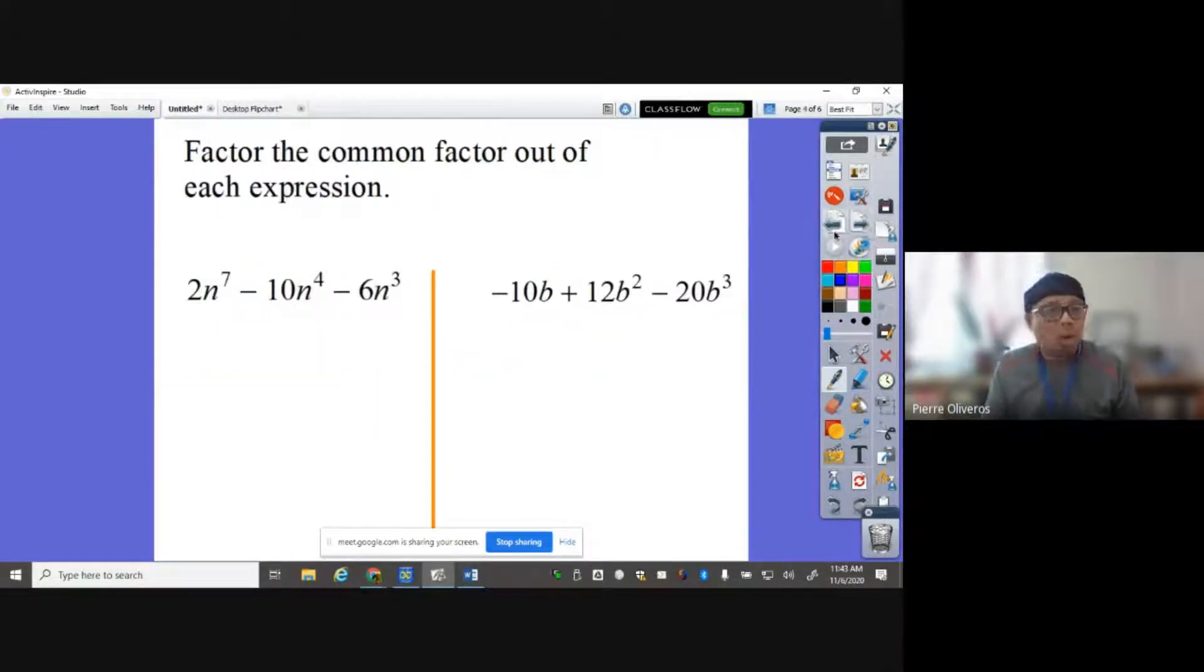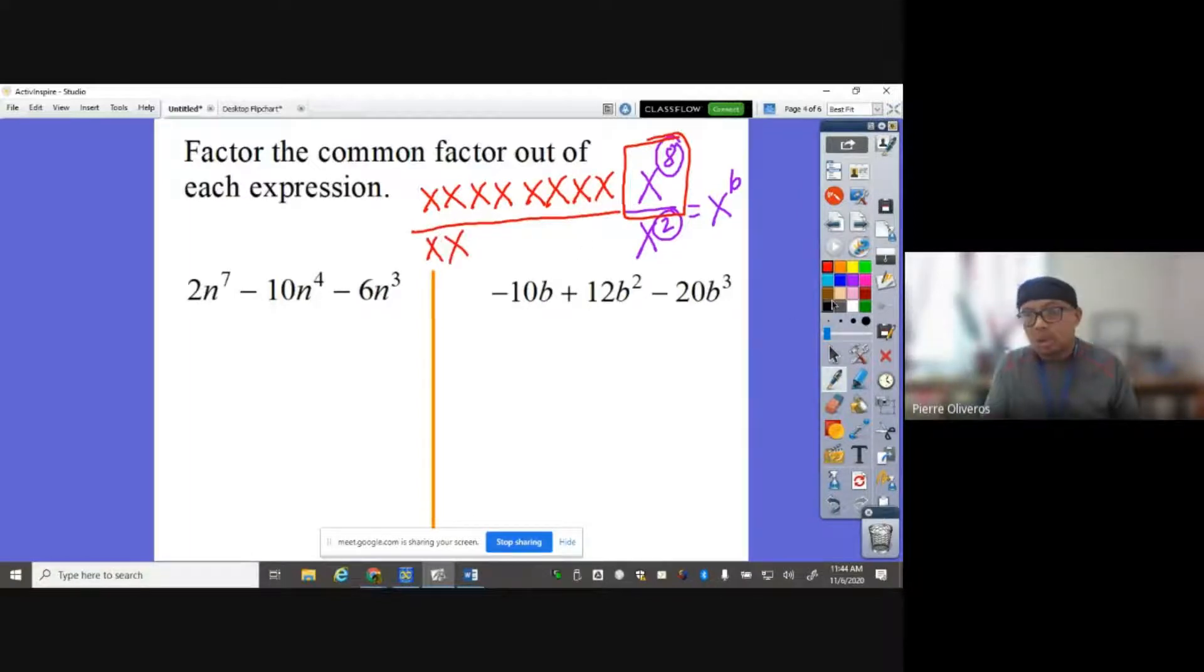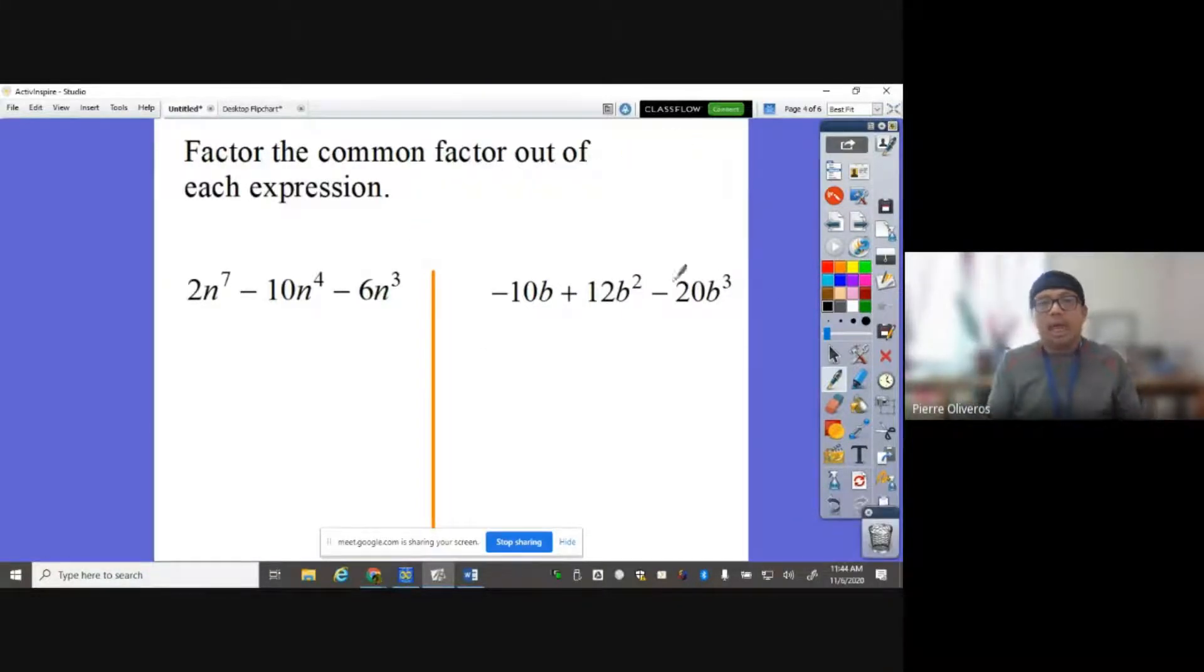Now, when we are dividing two variables, when we have, let's say, x8 divided by x squared, we subtract the exponent 8 and 2. So the answer there is x6. How come? Imagine, guys, how many x's do we have here? There are 8: 1, 2, 3, 4, 5, 6, 7, 8. How many x's do we have in the bottom? 1 and 2. So we can cancel this and that one. How many x's are left there? There are 6. That's why the answer is x6. That is part of the laws of exponent, and we will use that concept on this topic.